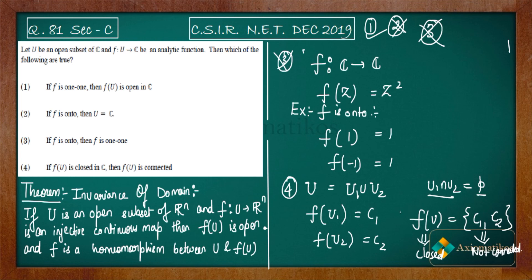Many of the exercises in this problem are experience-based. If you have done many problems in complex analysis, these things become easy to see. The fourth statement — if f(U) is closed then f(U) is connected — is also false, because we have constructed a counterexample where f(U) is finite, hence closed, but not connected.